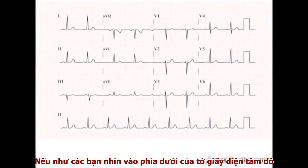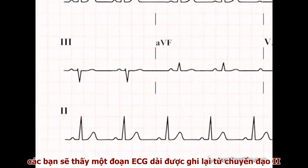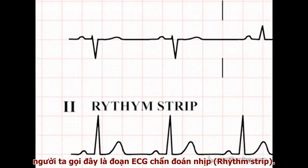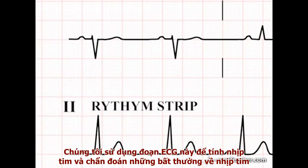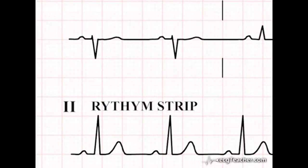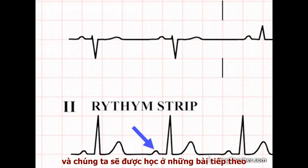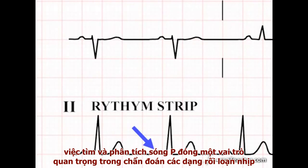If you look at the bottom of the ECG readout, you will see a long run of recording from lead 2. This is called the rhythm strip. We use the rhythm strip to calculate the heart rate and to diagnose abnormal cardiac rhythms. Lead 2 is used as the rhythm strip as it is usually the easiest lead in which to see P waves, and identification and analysis of P waves plays a key role in the diagnosis of rhythm disturbances on the ECG.